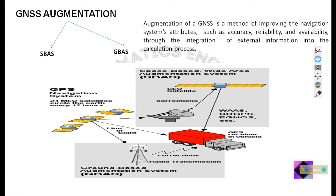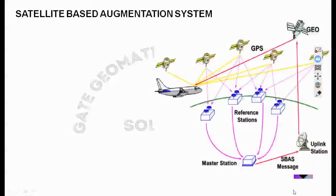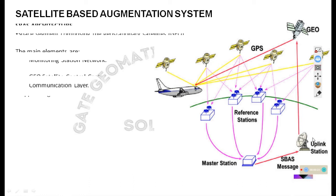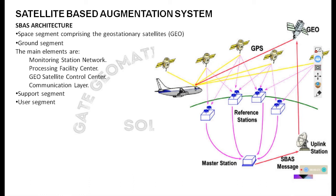S-BAS is required for enhancing the accuracy obtained with the use of geostationary satellites, which provide integrity and correction information. In the S-BAS architecture there is a space segment, a ground segment, a support segment, and a user segment. In the ground segment there should be a monitoring station.